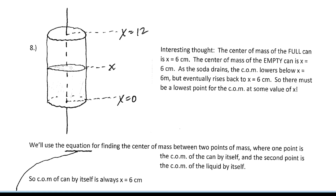We're only interested in the vertical location of the center of mass. We're looking at this axis — we'll call it the y-axis even though our variable is called x. We'll let x be the distance up or down the y-axis. When the can is full it's symmetrical and the center of mass is at x equals 6. When the can is empty it's also symmetrical and again the center of mass is at x equals 6.